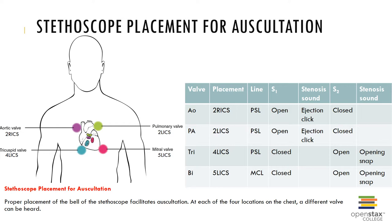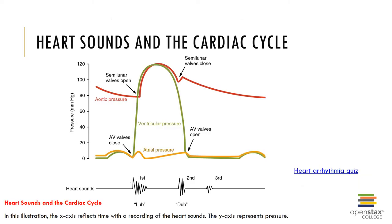Abnormal heart sounds are called heart murmurs, such as during mitral valve prolapse. The stethoscope's placement is important in order to listen to heart sounds.